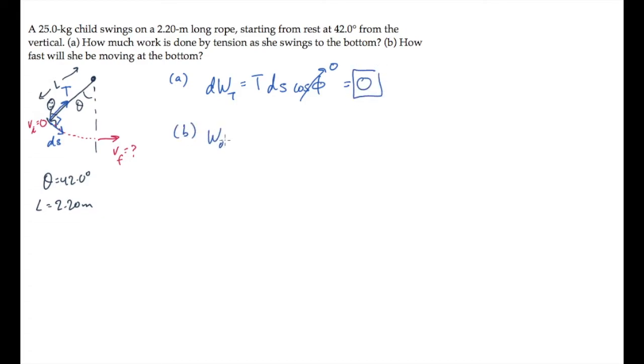Now we can solve part B, finding how fast she's moving at the bottom. We'll do this using the work and energy equation, which tells us that work other plus the initial energies, kinetic plus gravitational potential energy, equals the sum of the final energies.